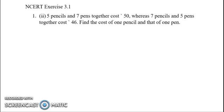Hello friends, today we have a question from Pair of Linear Equations in Two Variables, NCERT book Exercise 3.1, question number 2. We have been given that 5 pencils and 7 pens together cost rupees 50, and 7 pencils and 5 pens together cost 46 rupees.